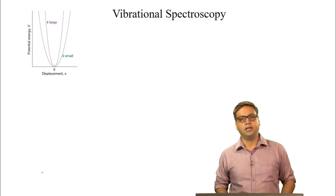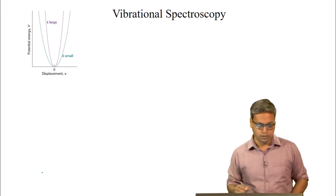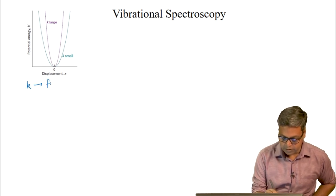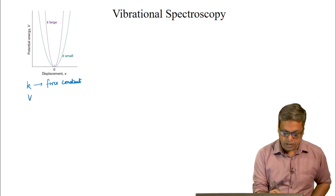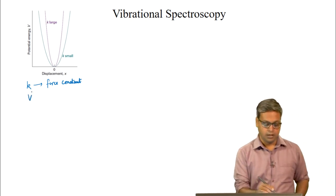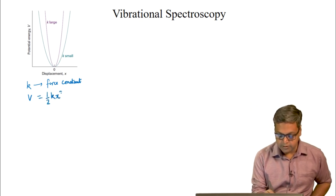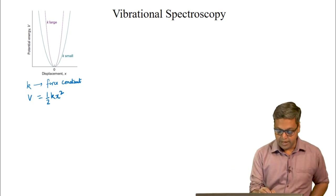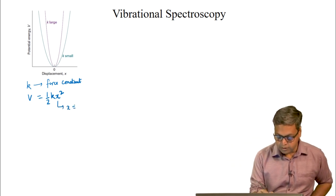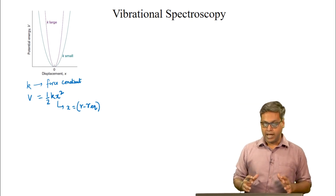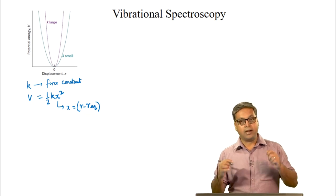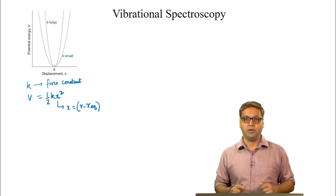We saw that if k is the force constant of the bond, the potential energy represented by V can be written as ½kx², where x equals r minus r-equilibrium. Here r is the bond length at any point during the vibration and r-equilibrium is the equilibrium bond length.